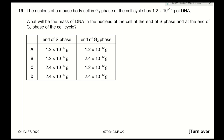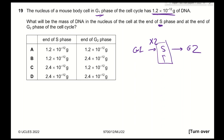Question 19: the nucleus of a mouse cell in G1 phase has 1.2 × 10⁻¹² grams of DNA. What is the mass of DNA at the end of S phase and at the end of G2 phase? DNA replicates during S phase, so the amount doubles after S phase. G2 comes right after S phase, so the DNA remains doubled in G2. Therefore, the DNA is doubled in both, and the answer is D.